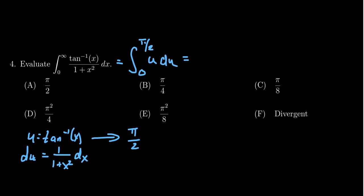And so by the u substitution, we've turned our improper integral actually into a proper integral. We find an antiderivative of u, which would be u squared over two, and we evaluate from zero to pi halves.